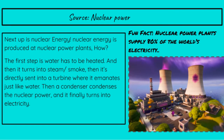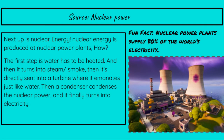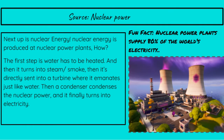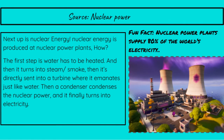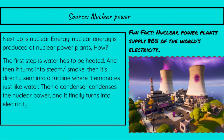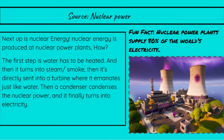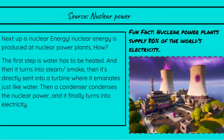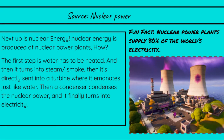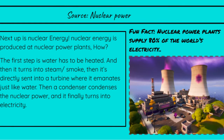Next stop is nuclear energy. Nuclear energy is produced at nuclear power plants. The first step is water has to be heated, and then it turns into steam or smoke. Then it's directly sent into a turbine where it flows just like water. Then a condenser condenses the nuclear power, and it finally turns into electricity. Another fun fact: nuclear power plants supply 80% of the world's electricity.